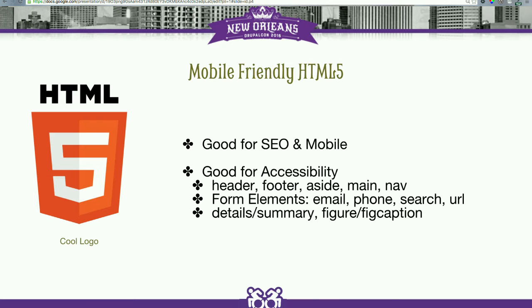HTML5 has elements like the header, footer, aside, and main that allow you to divide your content into different regions, giving it more context and meaning. Whether you're a machine or a person using a screen reader, you can understand the context in which a sentence or paragraph sits. There are also form elements like email, phone, and URL that help validate user inputs in an accessible way.